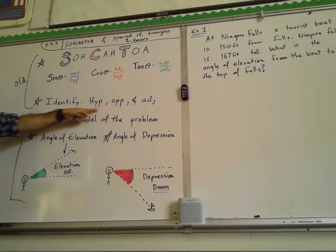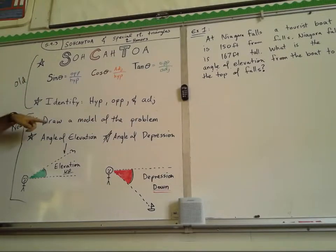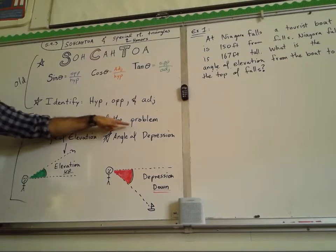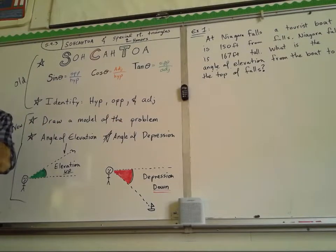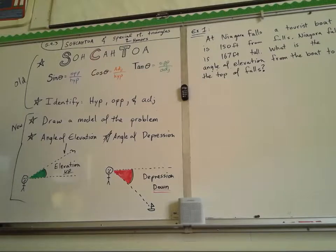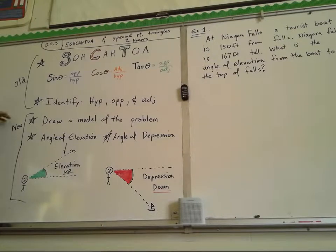We're going to draw a model for our two practice problems. When you go into the problem, underline everything that you think should go in the model — in the drawing, in the picture you're going to create. The new parts for today: we're going to draw a model, and we need to know these two different things.